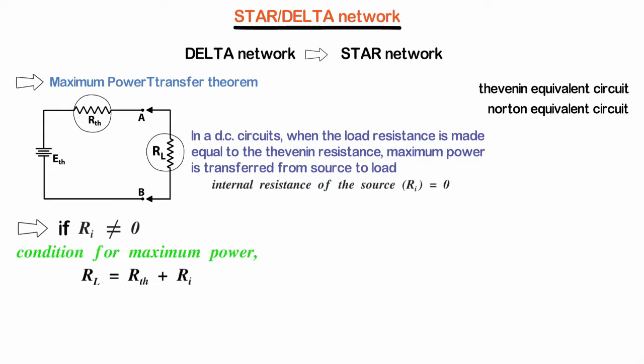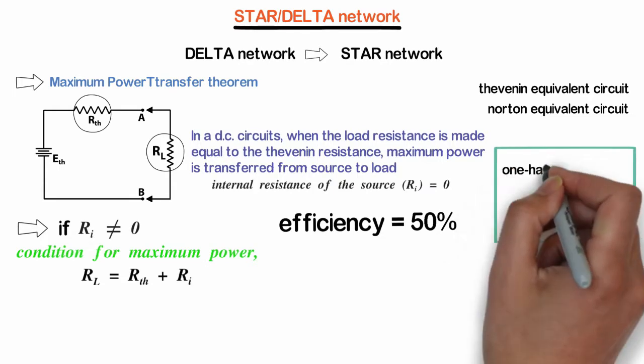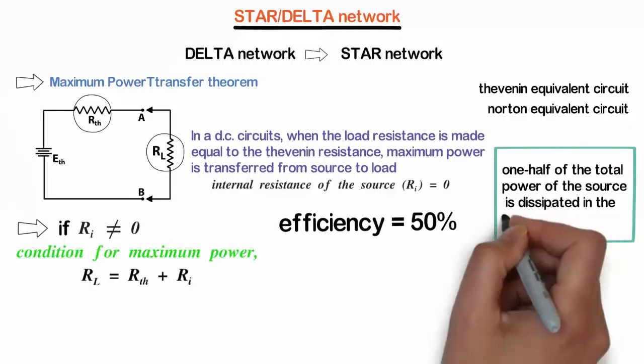It can be shown that under the maximum power transfer theorem, the efficiency is only 50%. That means one half of the total power of the source is dissipated in the load resistance.